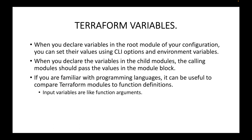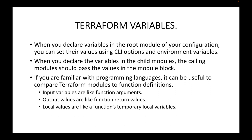If you are familiar with programming languages, it can be useful to compare Terraform modules to function definitions. When we talk about Terraform variables there are different ways to use them: first, input variables, which act as function arguments; second, output values, which act like a function's return value — we can use output values to tell Terraform to return certain values, like an instance IP address; and third, local values, which act as temporary local variables defining scope within your configuration. For now we will discuss input variables, and in upcoming sessions we'll cover output values and local values.